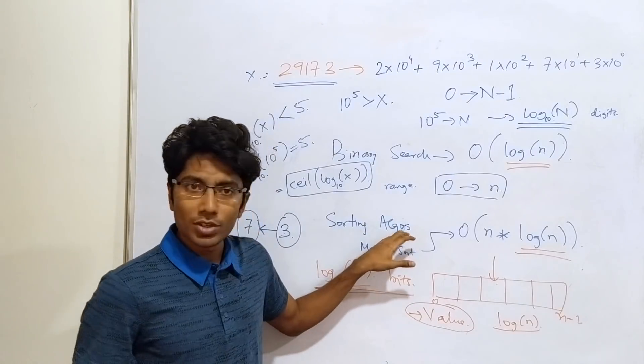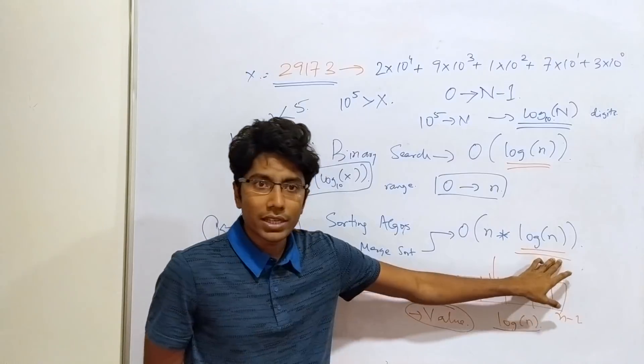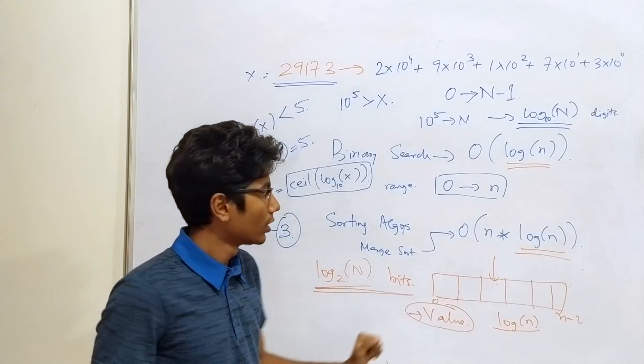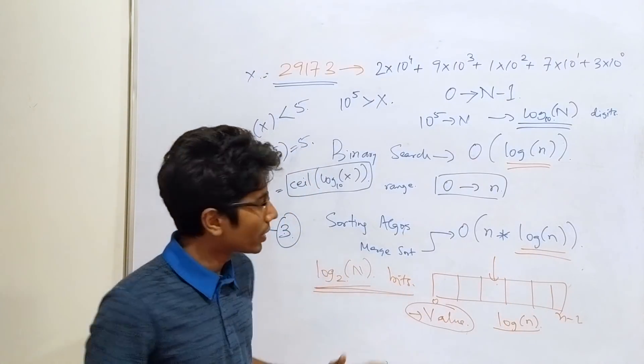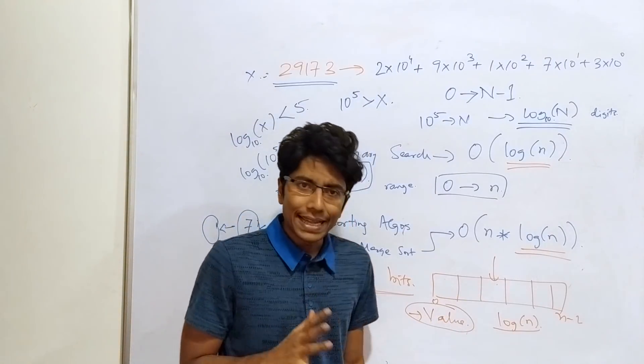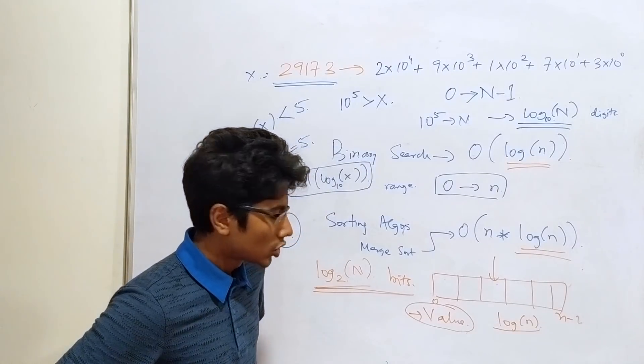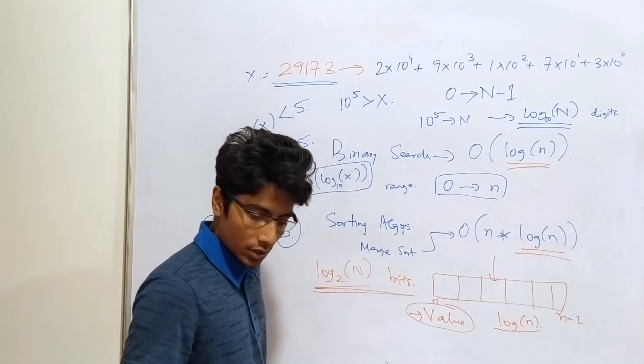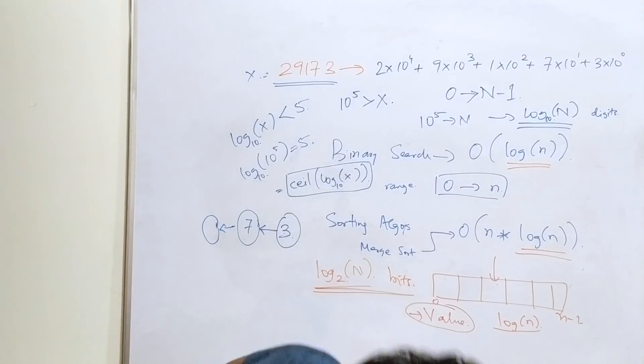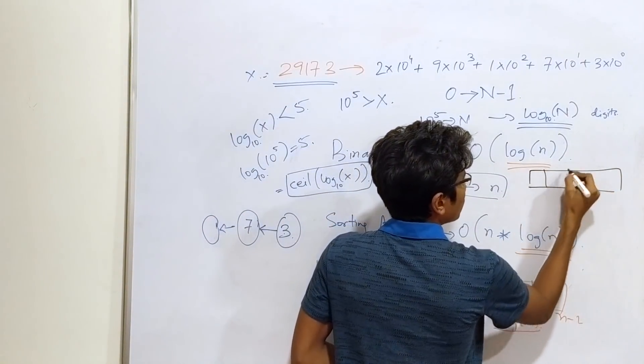Okay? Now, sorting algorithms like merge sort or quicksort. All of them have around n log n worst case time complexity. Technically, quicksort has even more. But yeah, n log n is the time complexity that we usually meet. Why is that? What is sorting actually? Sorting is like taking one array, which is input.